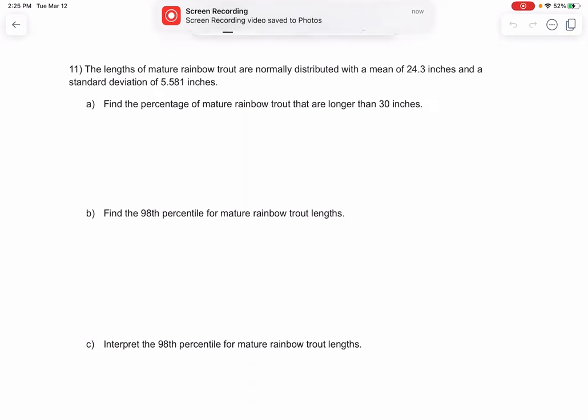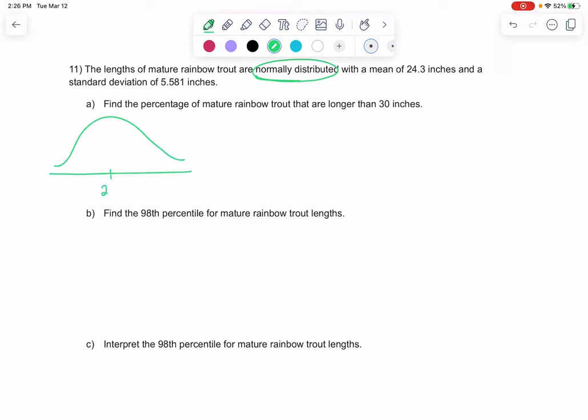Question 11, the lengths of rainbow trout are normally distributed. We'll use the normal curve. We have a mean of 24.3 in the middle. The standard deviation is given. We'll use that in a moment. We want to find the percentage. Percent is a hint towards area of rainbow trout that are longer than 30 inches. Longer means greater than. Before I can use normal CDF, I need the z-score. We're going to go to infinity since we're going to the far right, which is 10 to the 99. So we only need one z-score. It'll be 30 minus 24.3 all over 5.581.